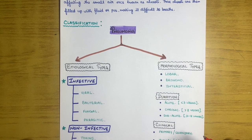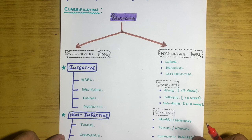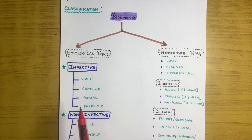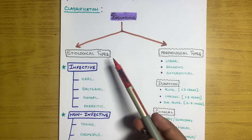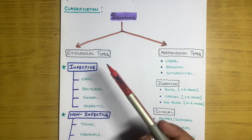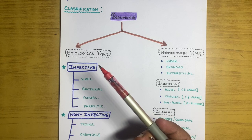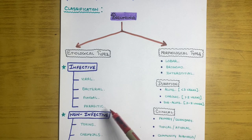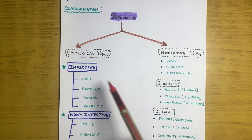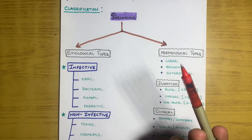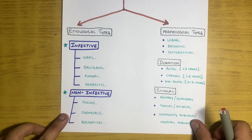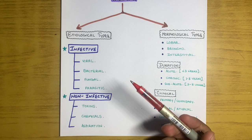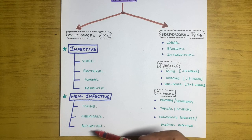What is the classification of pneumonia? Pneumonia is quite broadly categorized. Etiologically, it can be divided into infective or non-infective. Infective causes include viral pneumonia, bacterial pneumonia, fungal pneumonia, and parasitic pneumonia. In non-infective cases, it can be due to toxins, certain chemicals, or aspiration, which can also lead to pneumonia.